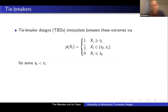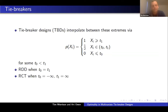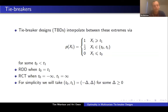Tiebreaker designs simply interpolate between these two extremes via the following treatment probability: p of x is 1 if x is above some upper threshold T sub 1, it's 0 if it's below some lower threshold T sub 0, and it's one-half in the middle. We can't always randomize fully, but maybe we can randomize in the middle. This is the RDD when T0 equals T1 — no inner region — and it's an RCT when T0, T1 is plus or minus infinity. For simplicity, I take T0, T1 as plus or minus delta for some delta greater than or equal to zero, which I call the size of the randomization window.